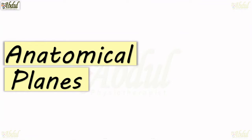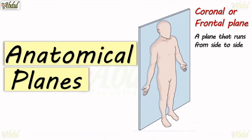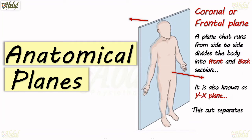Let's see what the anatomical planes are. Number one is the coronal or frontal plane — a plane that runs from side to side and divides the body into front and back sections, as you can see in the diagram. It is also known as the YX plane, and this plane separates the back and belly of the human body.